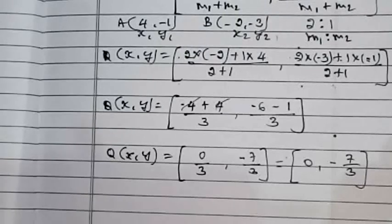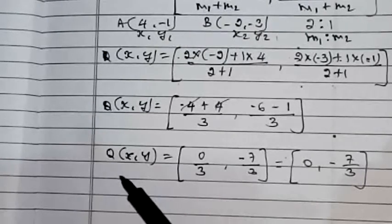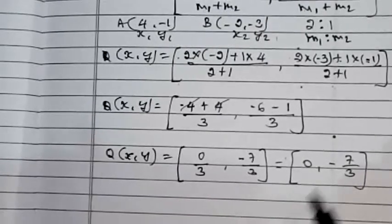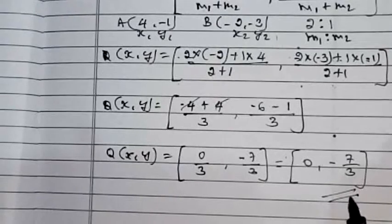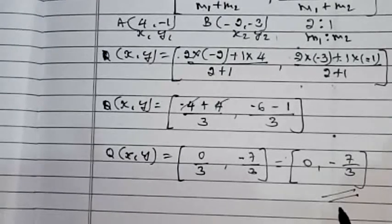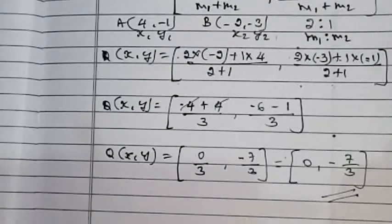So this is how we solve the problem. The coordinates of P are (2, -5/3) and the coordinates of Q are (0, -7/3). This is an important problem — learn it well. Thank you.